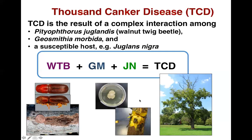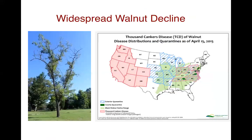As these cankers grow, they coalesce, they girdle the branches, and then those branches die. Thousand cankers disease was first noticed when trees began to decline in the mid-1990s in the southwest. The disease wasn't officially described until 2008 in Colorado, and then the first time it was found in the native range of black walnut was in 2010 in Tennessee.